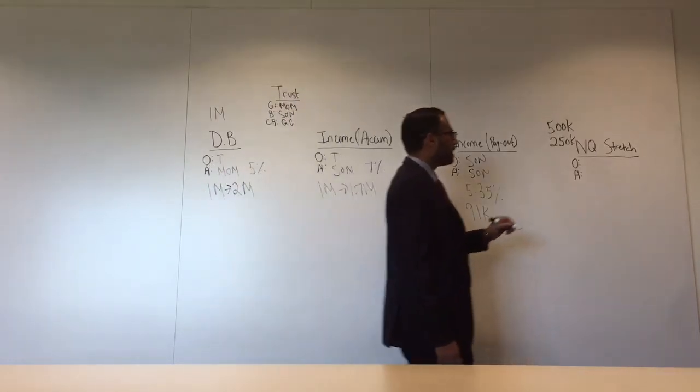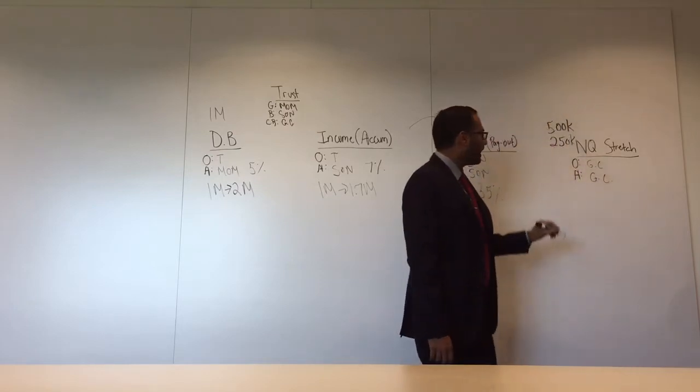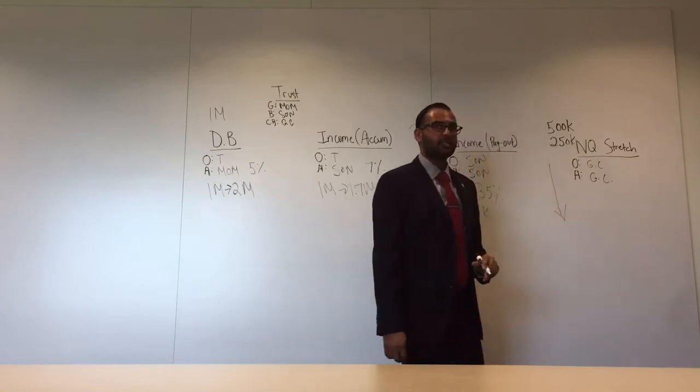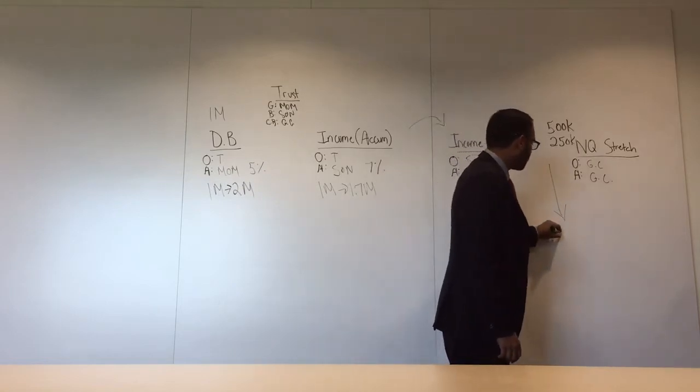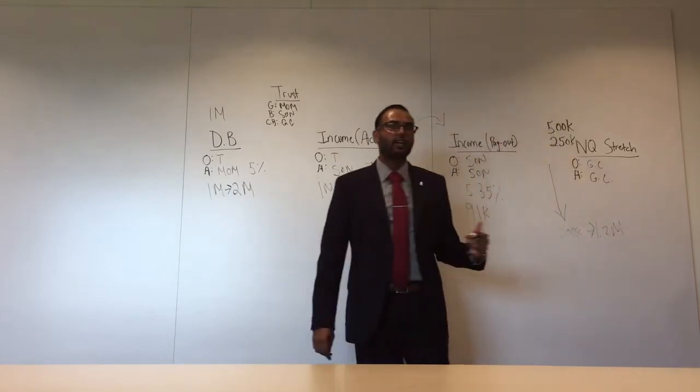What we're able to do is we can name the grandchildren as the owner and the grandchildren as the annuitant and we stretch this over their entire life expectancy, and we're able to turn this $500,000 into over $1.2 million over that entire generation.